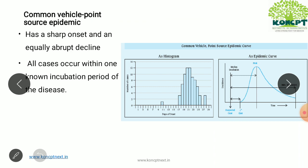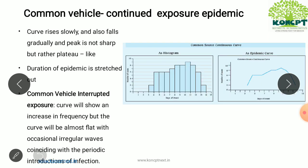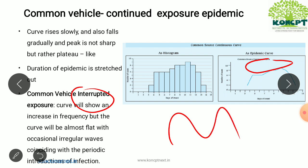The epidemic curve of a common vehicle point source epidemic — the one given in the question — has a very sharp curve: it rises sharply and also falls rapidly, and it always has a distinct peak. For common vehicle continued exposure, the curve rises slowly and falls gradually, and the peak is not sharp — it is plateau-like. For interrupted exposure, there are multiple irregular waves.